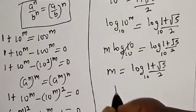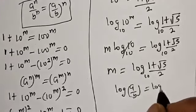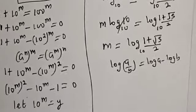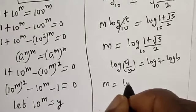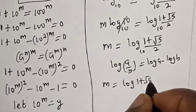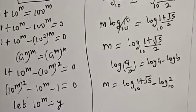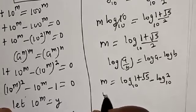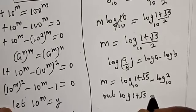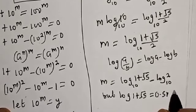Note that log(a/b) equals log a minus log b. So this becomes m equals log base 10 of (1 plus √5) minus log base 10 of 2. Now log(1 plus √5) is approximately 0.3010, and log 2 is approximately 0.3010.